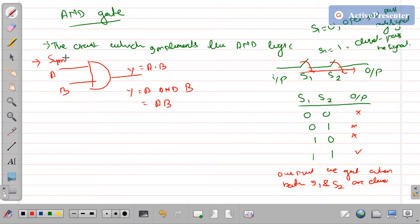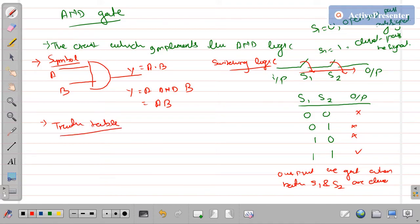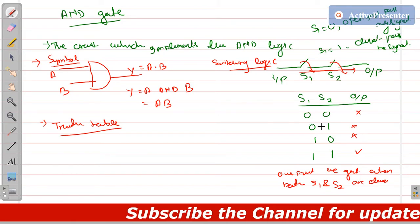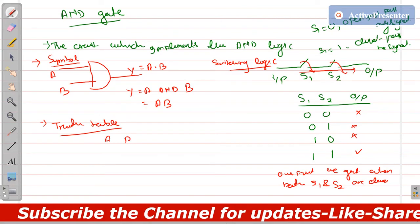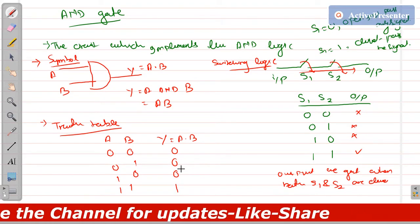This is the symbol of the AND gate, and this is the switching logic. Now for the truth table: we have two inputs A and B and one output Y. The combinations are 0,0 then 0,1 then 1,0 and 1,1. The output is A·B (A AND B). According to the logic, the output is 0 everywhere except where both A and B are 1. This is the required truth table.